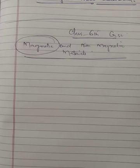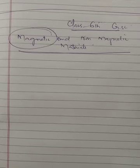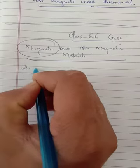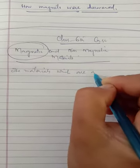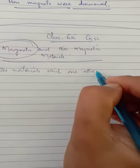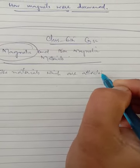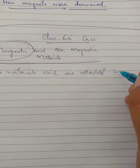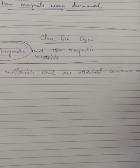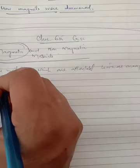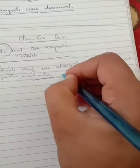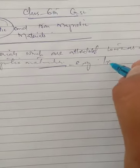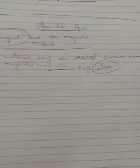The materials which are attracted towards magnets are called magnetic materials. For example, iron is a magnetic material.